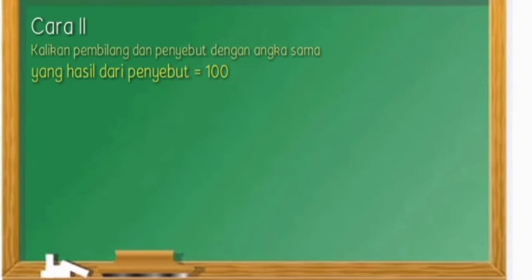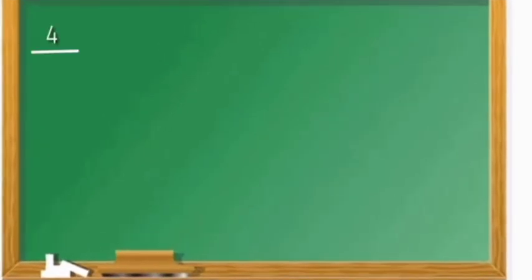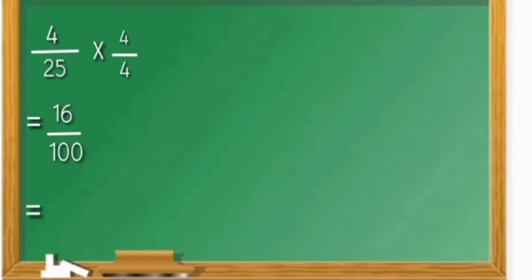Ada cara yang kedua: kalikan pembilang dan penyebut dengan angka yang sama, yang hasilnya dari penyebut sama dengan seratus. Contohnya, empat per dua puluh lima sama dengan berapa persen? Penyebutnya ada dua puluh lima, maka sama-sama dikalikan empat. Empat per dua puluh lima dikali empat per empat. Empat kali empat sama dengan enam belas, sedangkan dua puluh lima kali empat sama dengan seratus. Enam belas per seratus sama dengan enam belas persen.